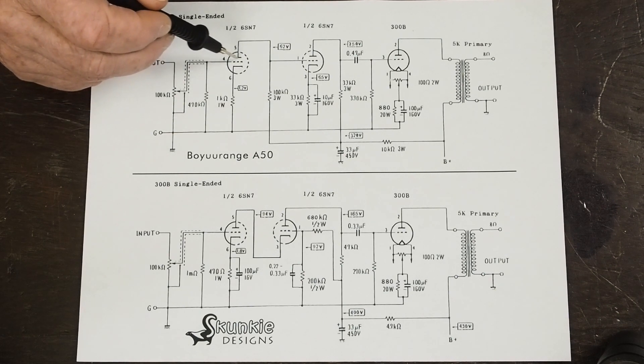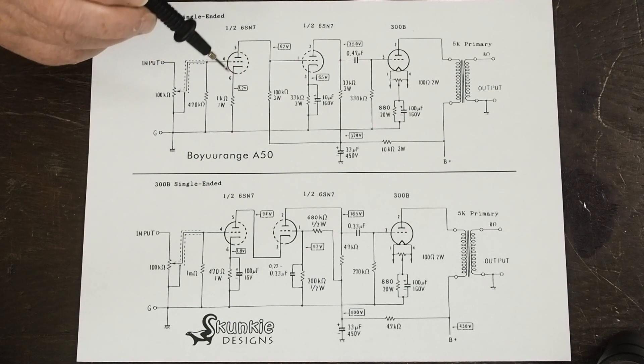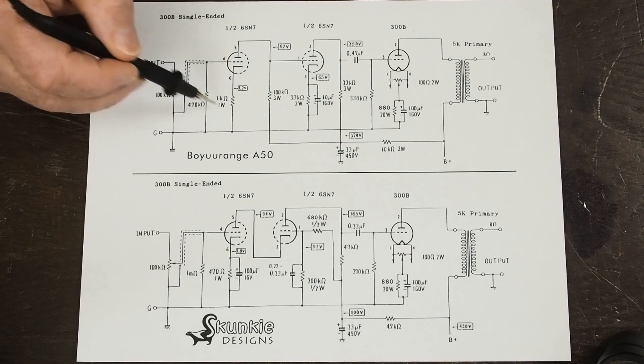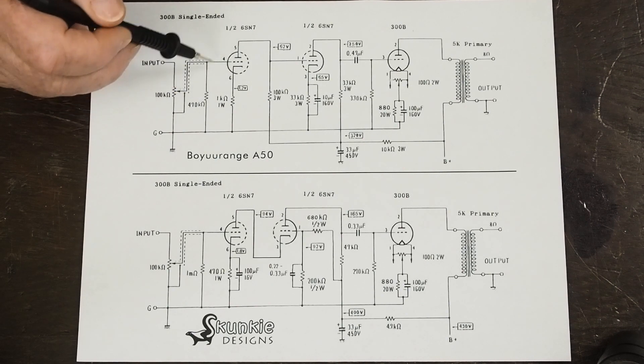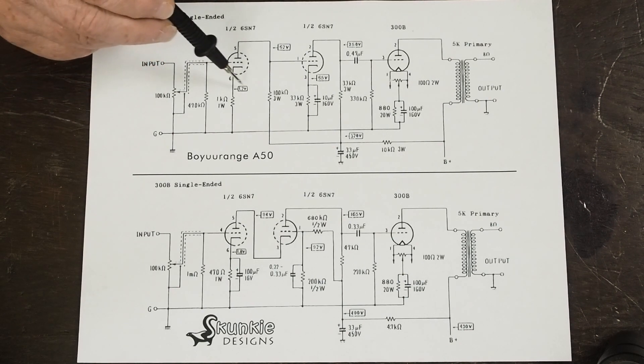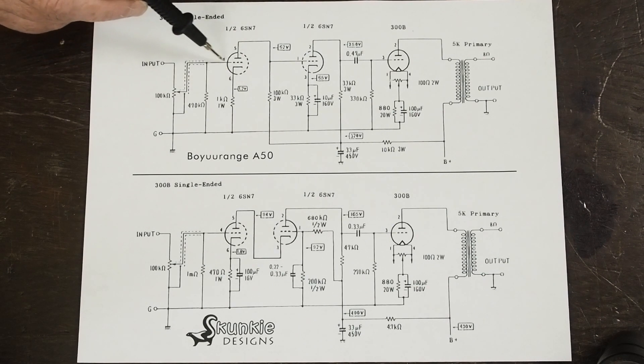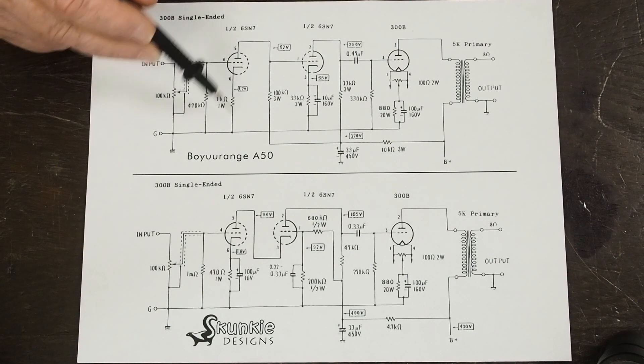So the grid controls the flow of current through this first stage of tube. Not the voltage, the current. This resistor here is the cathode bias resistor and it sets the negative bias on the grid of this tube. And as you can see, it has 1.2 volts here. Well, that creates a negative 1.2 volts when you're referencing the cathode to the grid of the tube. And the tubes want to see negative voltage on the grid. You don't want it to go positive. So that's the purpose of this resistor here.